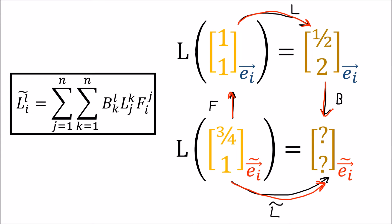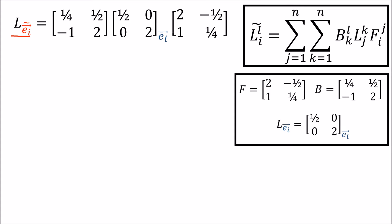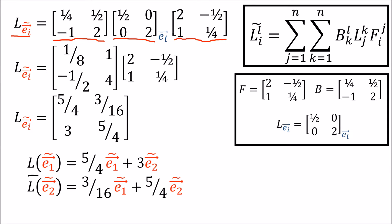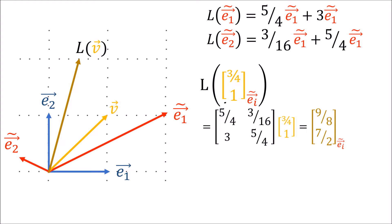Let's see how this works in practice. To get our matrix L-tilde in the new basis, we start with the matrix in the old basis and multiply on the left by B and on the right by F. Working through those multiplications gives us this matrix, which tells us how to write the outputs of the linear map as linear combinations of the new basis vectors. Applying this new matrix to the new basis vector components gives 9/8 and 7/2. Checking visually: slightly more than one E1-tilde is needed, about 9/8, and about three and a half E2-tildas, which is 7/2. The new L-tilde matrix does what we want.